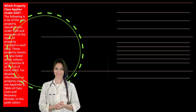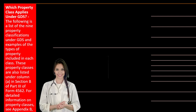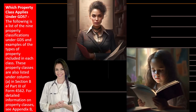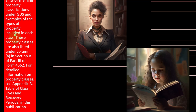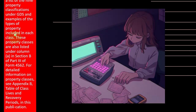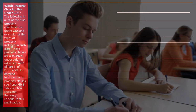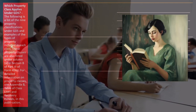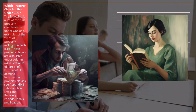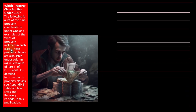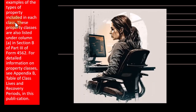Which property class applies under GDS? There are nine property classifications under GDS with examples of the types of property in each class. This differs from GAAP, because under the tax code the classifications are much stricter — people have an incentive to increase up-front deductions, so the IRS must be more stringent. These property classes are listed under Column A in Section B of Part 3 of Form 4562, and detailed information is in Appendix B, Table of Class Lives and Recovery Periods in Publication 946.